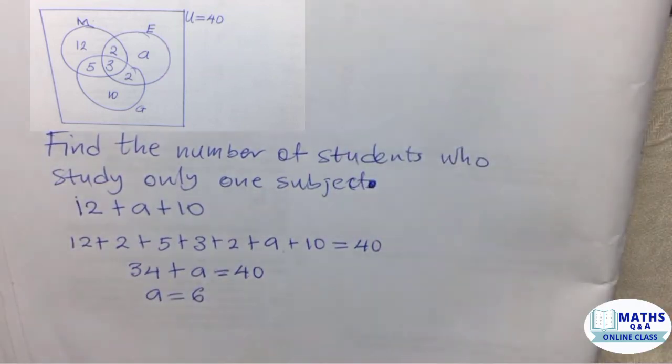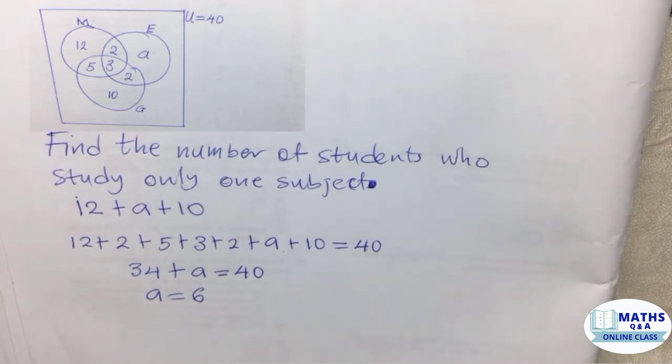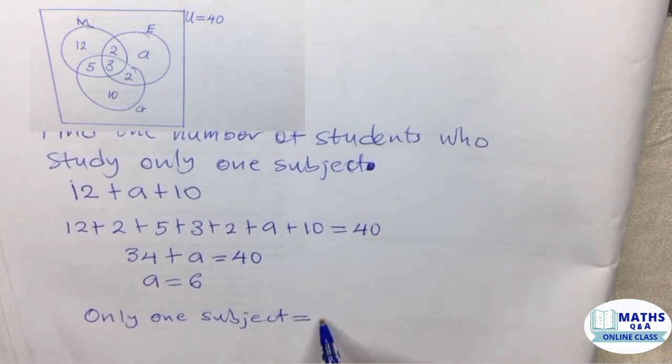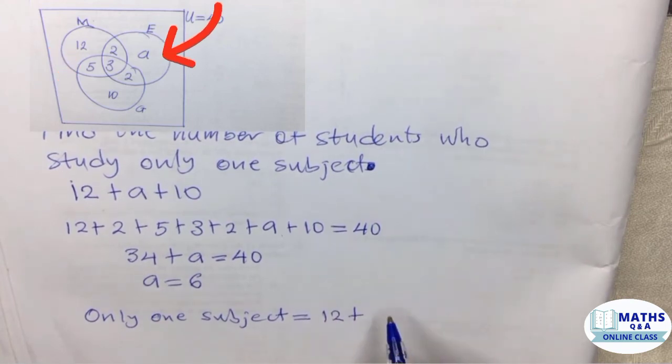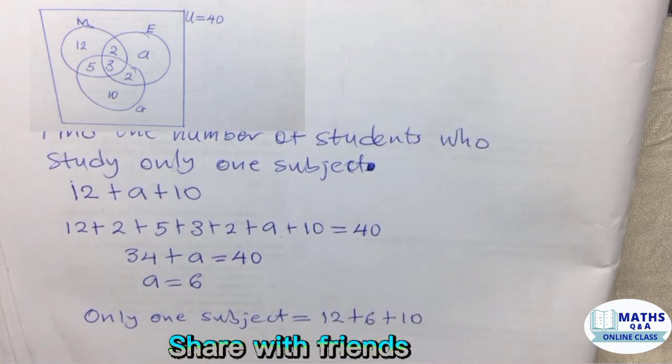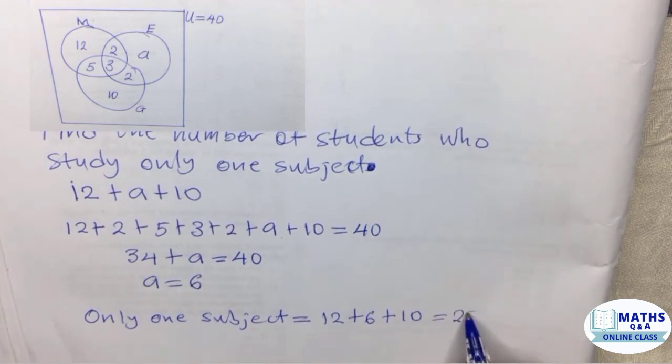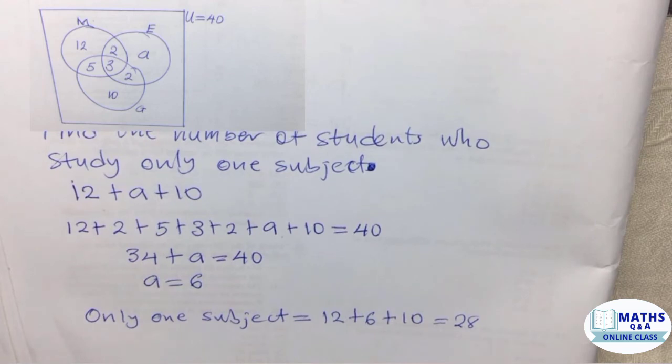Then we would have to find the number of students who study only one subject. For only one subject, that will equal mathematics only, which is 12, plus economics only, which is now 6, and then we have geography only, which is 10. So if we sum them together, we have 28. So 28 students study only one subject.